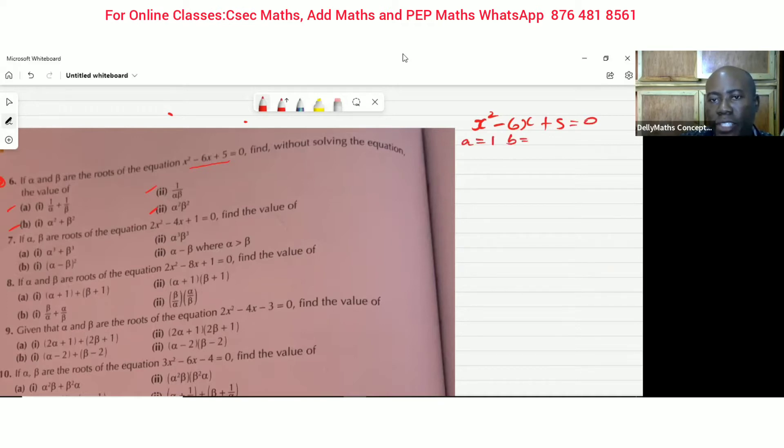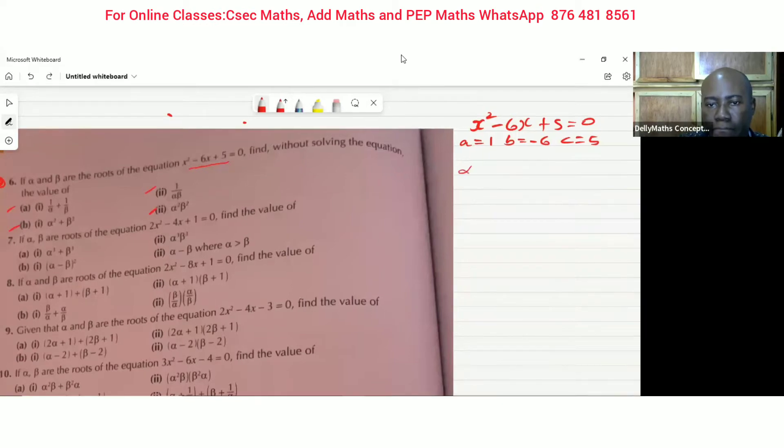B is the coefficient of x, which is negative six, and C is the constant, which is five. If we're going to do this, what we have to remember is the sum. We're dealing with alpha plus beta, and the sum of that is minus B over A. We have to remember that the product of alpha and beta is C over A.